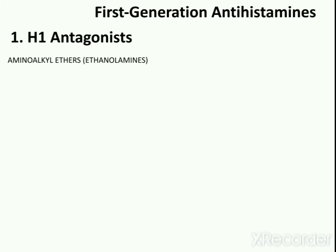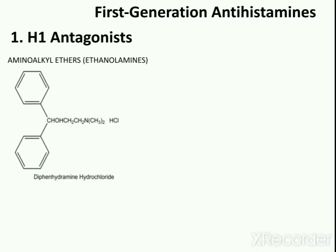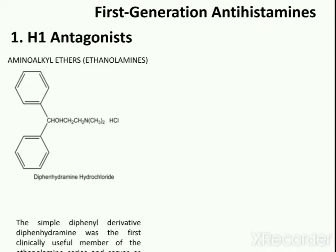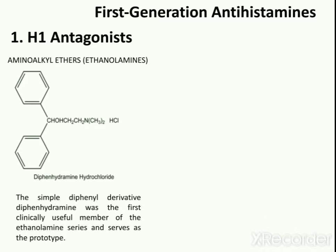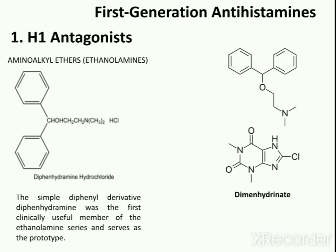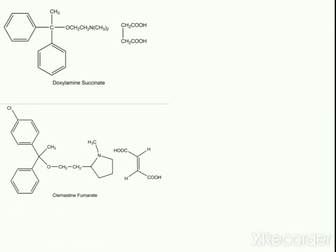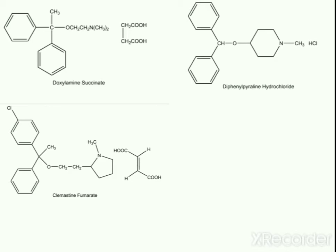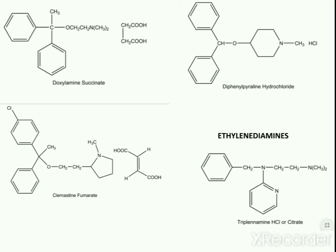The first subcategory of H1 antagonists is aminoalkyl ethers, also known as ethanolamines. This includes diphenhydramine hydrochloride, which was the first clinically useful member of the ethanolamines series and serves as the prototype. Other drug candidates include doxylamine succinate, clemastine fumarate, and diphenylpyraline hydrochloride or citrate.